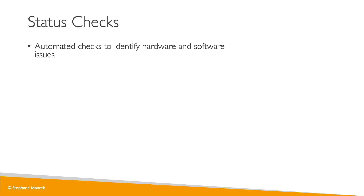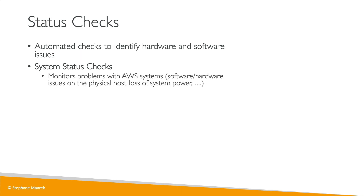Let's have a look at status checks. Status checks on your EC2 instances are automatic checks done by AWS that will identify hardware and software issues with your EC2 instances. There are two types. The first type is a system status check, and this will be monitoring of problems that happen with the systems of AWS directly — for example, a software or hardware issue on the actual physical host that your EC2 instance is placed on.